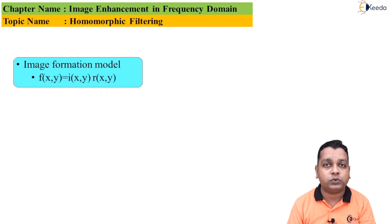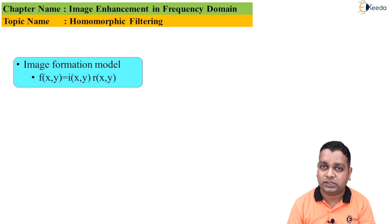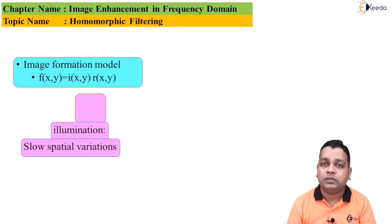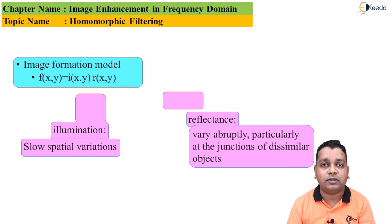This image formation model is represented mathematically as f(x, y), where x and y are the spatial parameters and f represents the corresponding intensity. This depends on two factors given by the product i(x, y) · r(x, y), where i represents the illumination portion and r represents the reflected portion. Illumination shows the spatial variations in the image, while reflectance shows the abruptness at junctions of dissimilar objects in the scene.